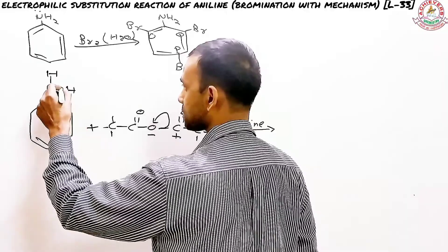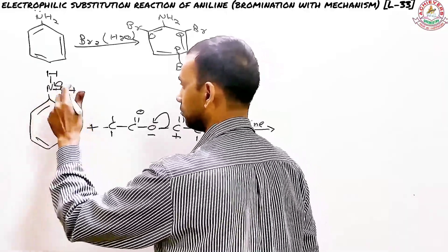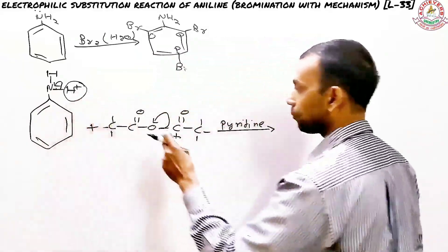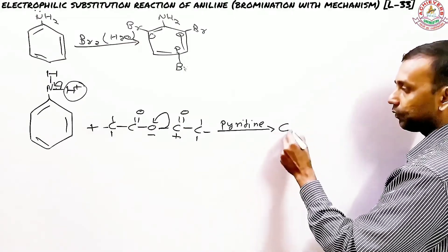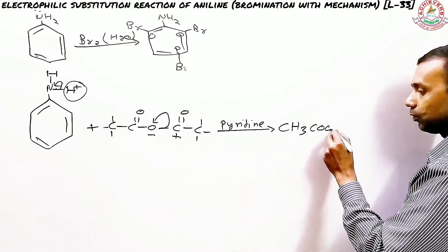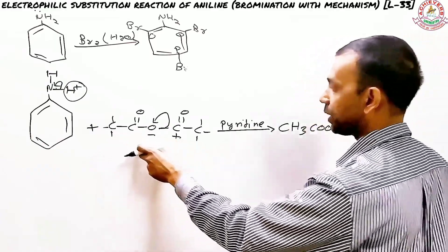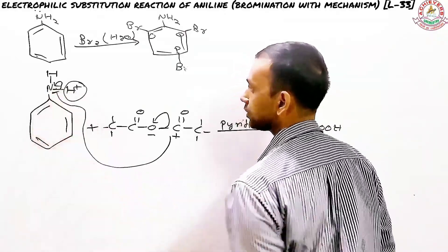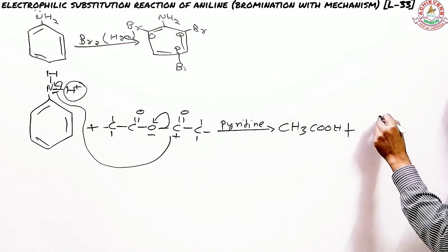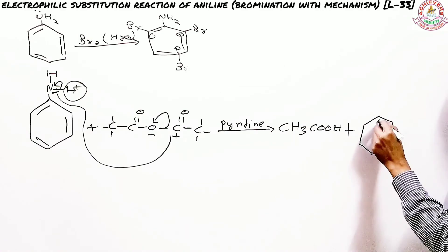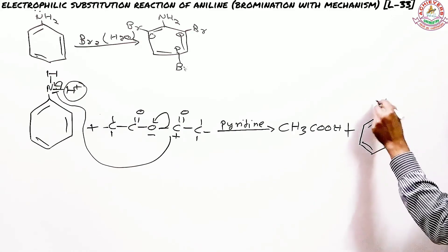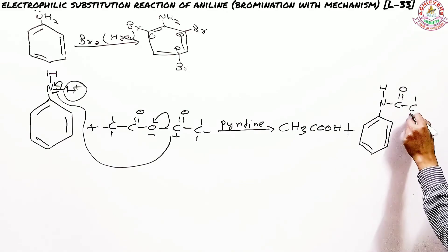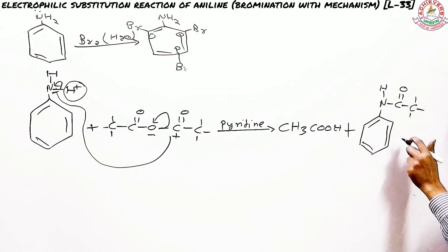When the bond undergoes cleavage, hydrogen comes out as a positive charge and nitrogen becomes negatively charged. The hydrogen goes with the oxygen to form ethanoic acid (CH3COOH), while the electrophilic acyl group attaches to the nitrogen. The product now has nitrogen attached to one hydrogen and to the acetyl group (C=O and CH3).